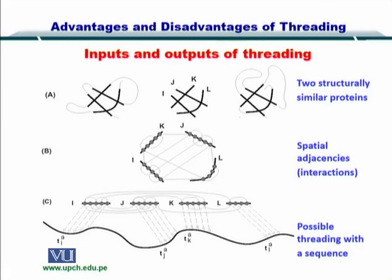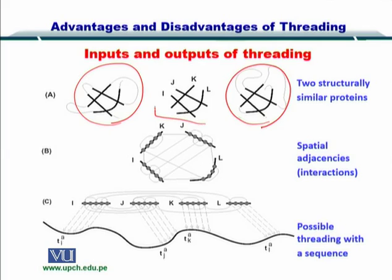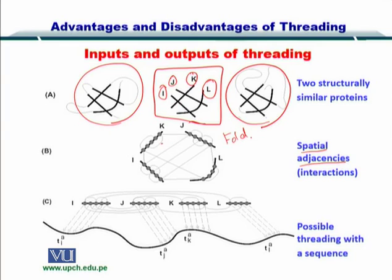Looking at the inputs and outputs of threading, we have two structurally similar proteins, and in both of them we have a fold that is common. This common fold contains secondary structures I, J, K, and L. We also measure their spatial adjacencies — that is, how close I is to J, and L to K, and so on.